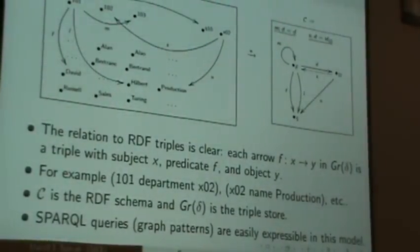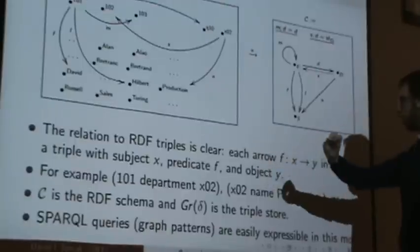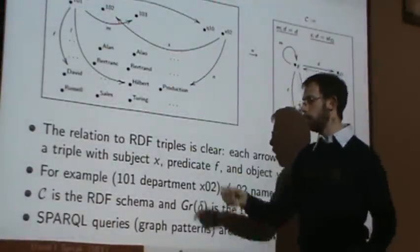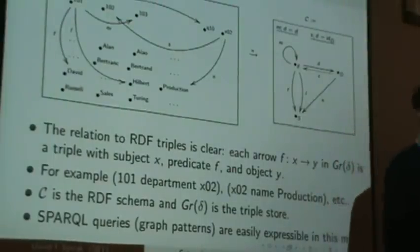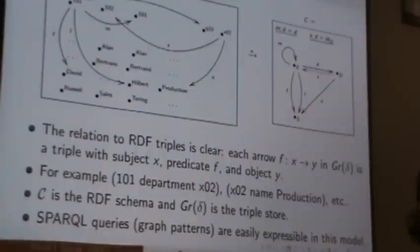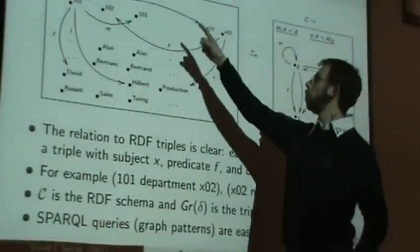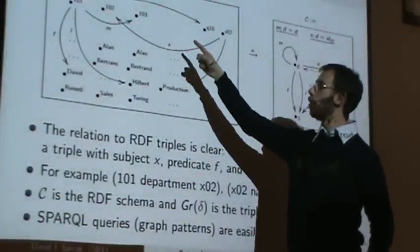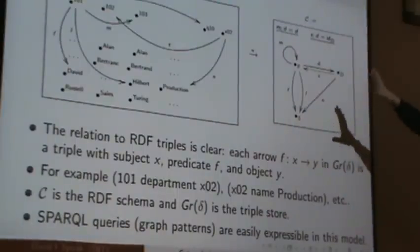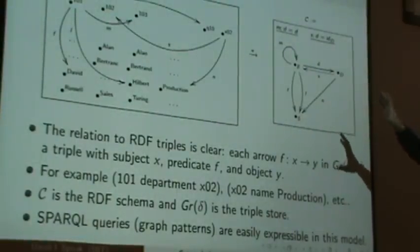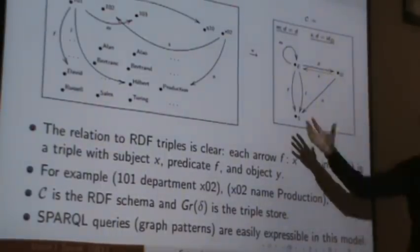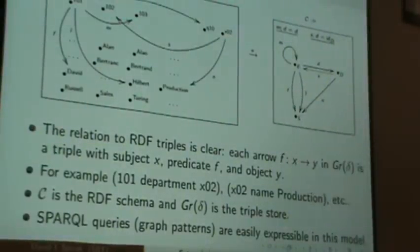I said it's clear, but maybe it's not completely clear. The relation to RDF triples is, quote, clear. Every arrow f from x to y here is a triple. I don't know if you guys know RDF or have ever heard of it. But it's a subject predicate object relationship. And so you can say the department of 101 is Q10. The name of 101 is David. The last name of 101 is Hilbert. And all those are kind of written as single arrows upstairs. And the schema, the RDF schema, is here.